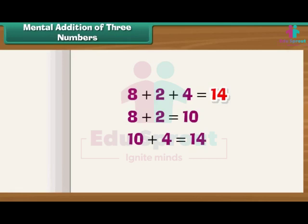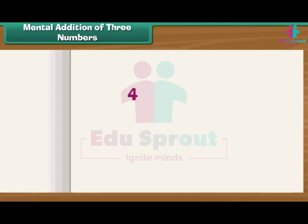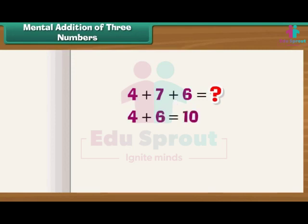What is 4 plus 7 plus 6? We add 4 and 6 first, because 4 plus 6 equals 10. Now we add 7 to 10: 10 plus 7 equals 17. So 17 is the answer.